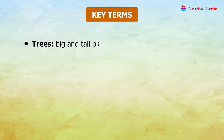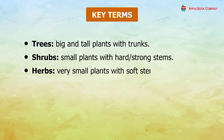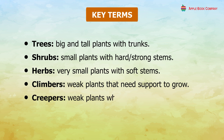Here are a few key terms. Trees are big and tall plants with trunks. Shrubs are small plants with hard or strong stems. Herbs are small plants with soft stems. Climbers are weak plants that need support to grow. Creepers are weak plants which grow along the ground.